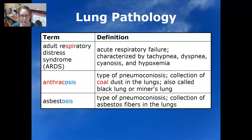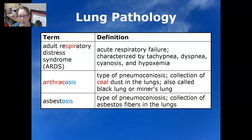Now we're going to move on to pathologies that affect the lungs. Adult respiratory distress syndrome, abbreviated as ARDS, is acute respiratory failure in an adult. It is characterized by tachypnea (fast breathing), dyspnea (difficulty breathing), cyanosis (bluing of the lips and fingertips), and hypoxemia, or low oxygen level in the blood.